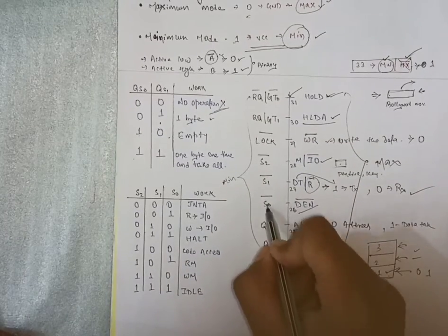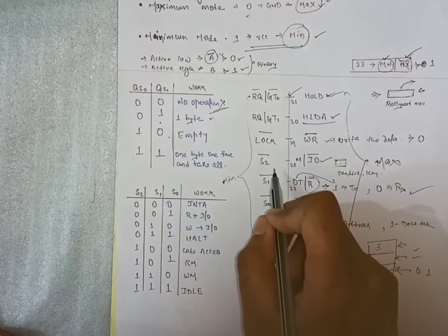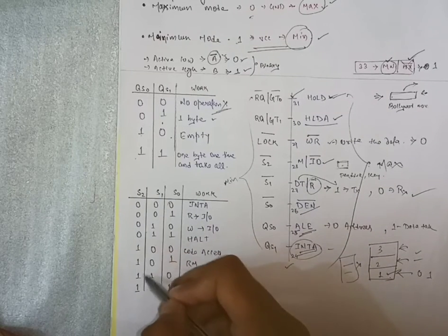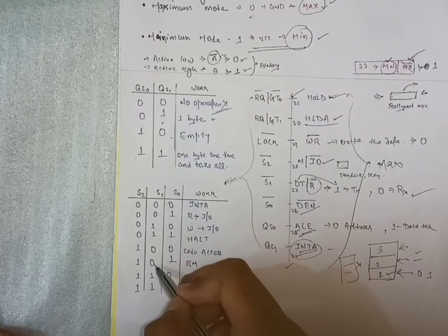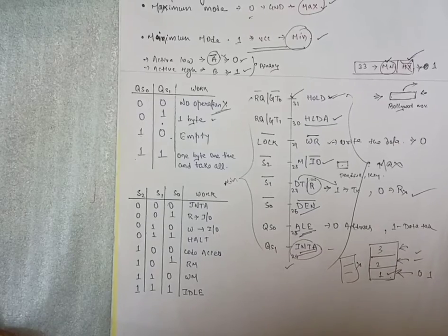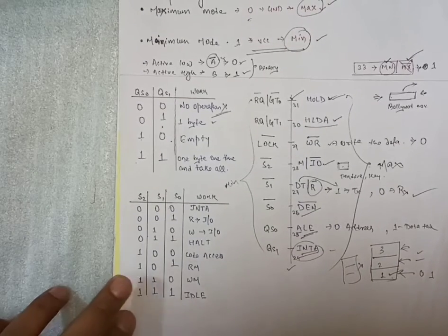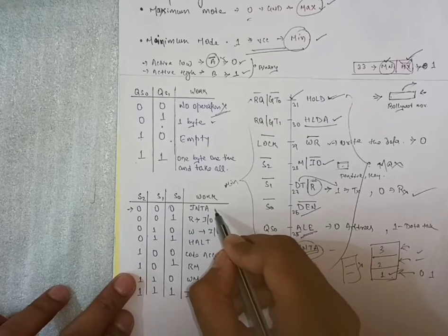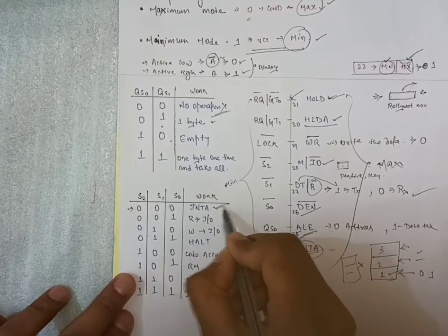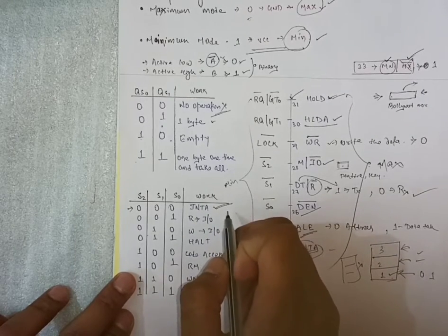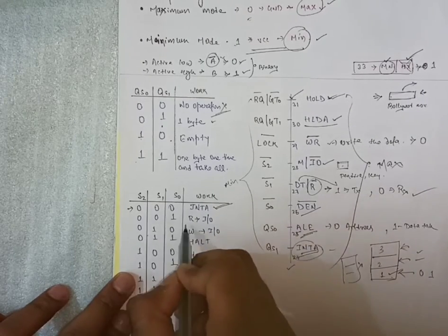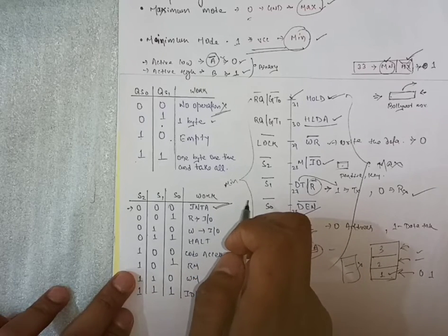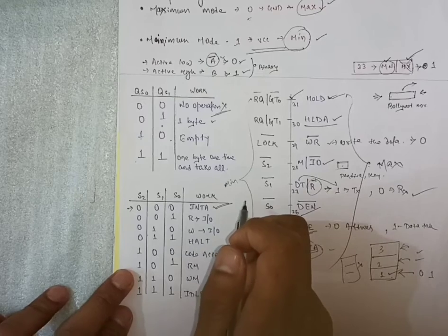After that we will look S0, S1, S2 from the binary table again. Firstly four zero will take, four one, double zero, double one, double zero, double one, zero one, zero one, zero one. If the both three value is zero, that is interrupt acknowledgement. If zero zero one, means reading from input output device. If zero one zero, writing the data from input output device.